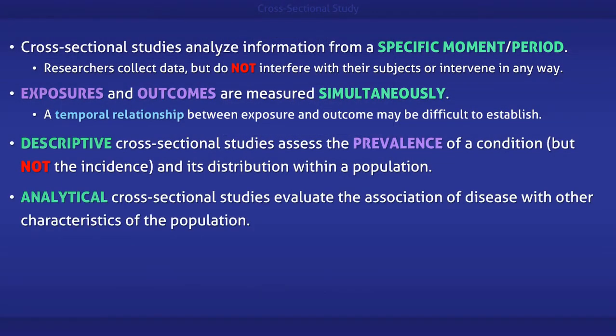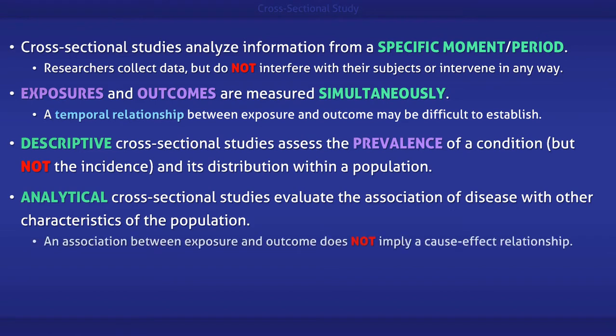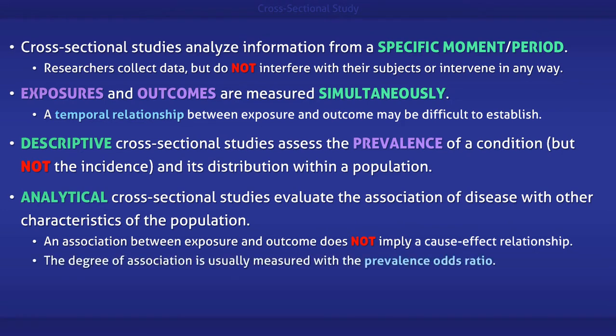Analytical cross-sectional studies evaluate the association of disease with other characteristics of the population. However, an association between exposure and outcome does not imply a cause-effect relationship. The degree of association, particularly when the study involves a chronic disease, is usually measured with the prevalence odds ratio.